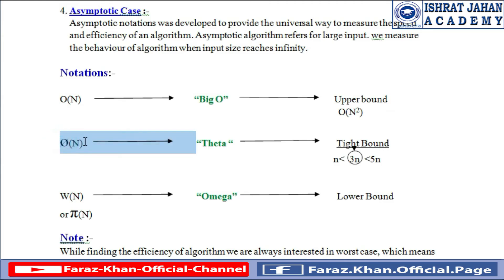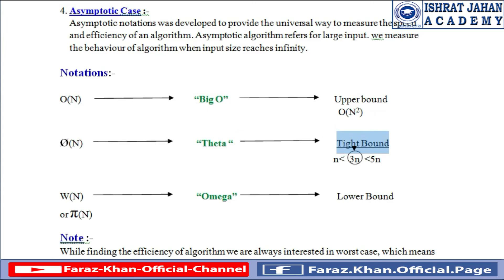Let's move on to Theta notation. We represent Theta for tight bound. For example, if n is less than 3n and 3n is less than 5n, then n would be the lower bound, 5n would be the upper bound, and 3n would be the tight bound. So we can represent the average case with the help of Theta notation in asymptotic notations.